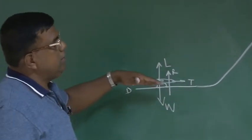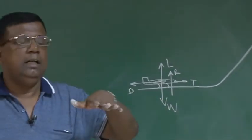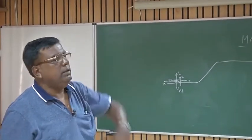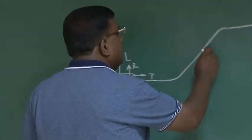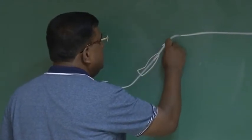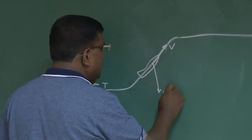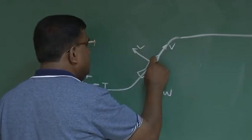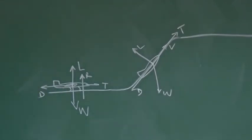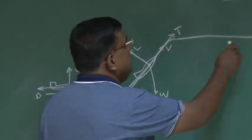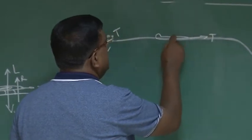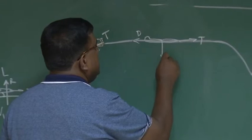So when it goes for a climb, we have velocity V, weight W, lift, drag, and thrust. In the cruise phase we have a similar diagram: thrust, drag, weight, and lift. And when going for landing, the diagram shows W, lift, drag, and thrust — where thrust is put to very minimum. That is basically the representation of lift, drag, weight, and thrust.